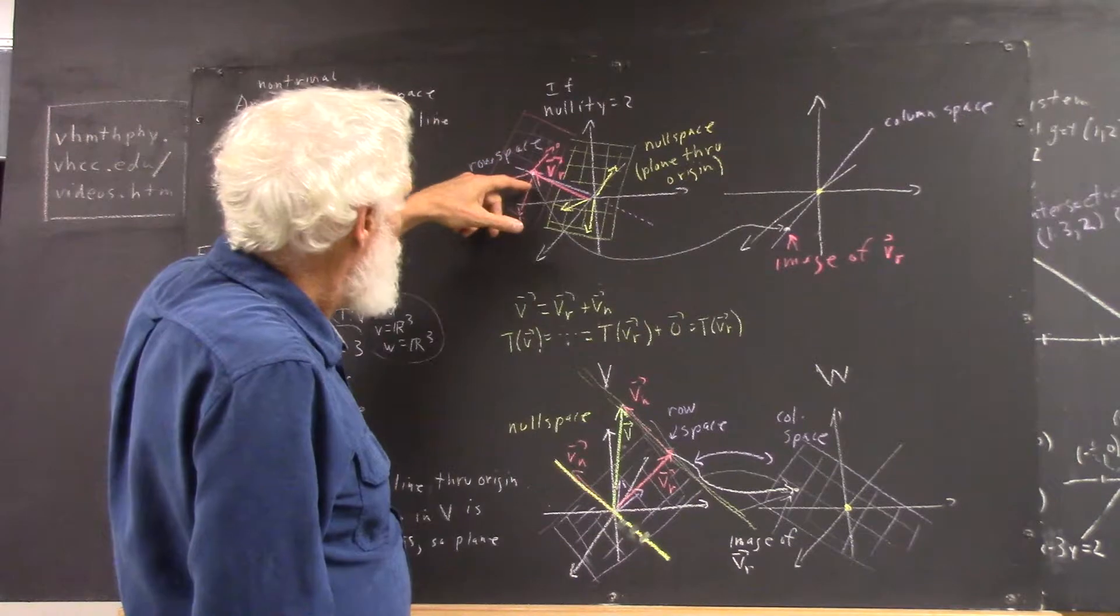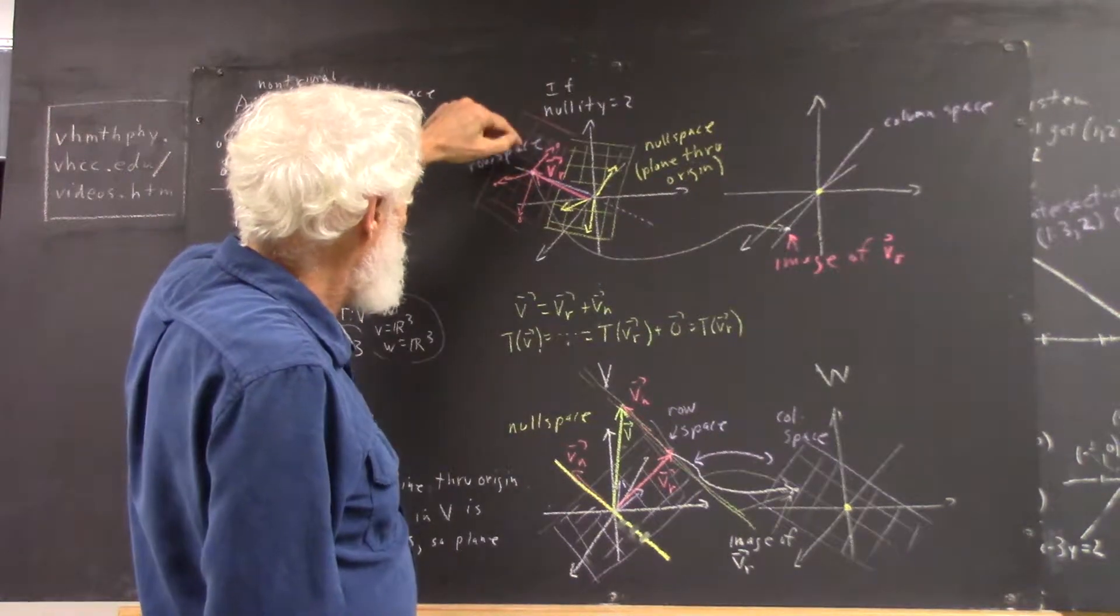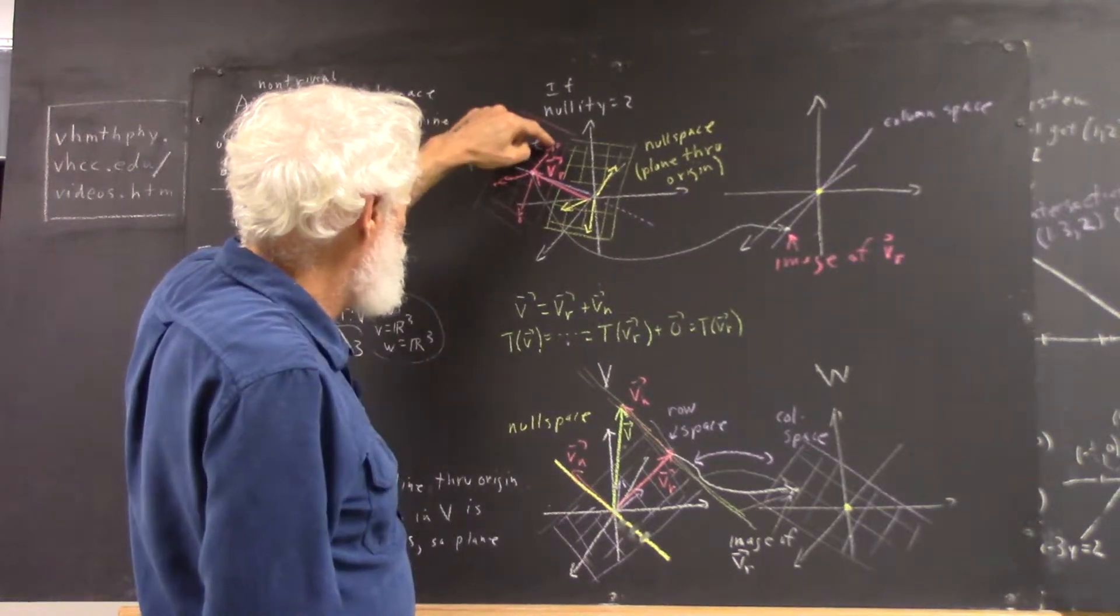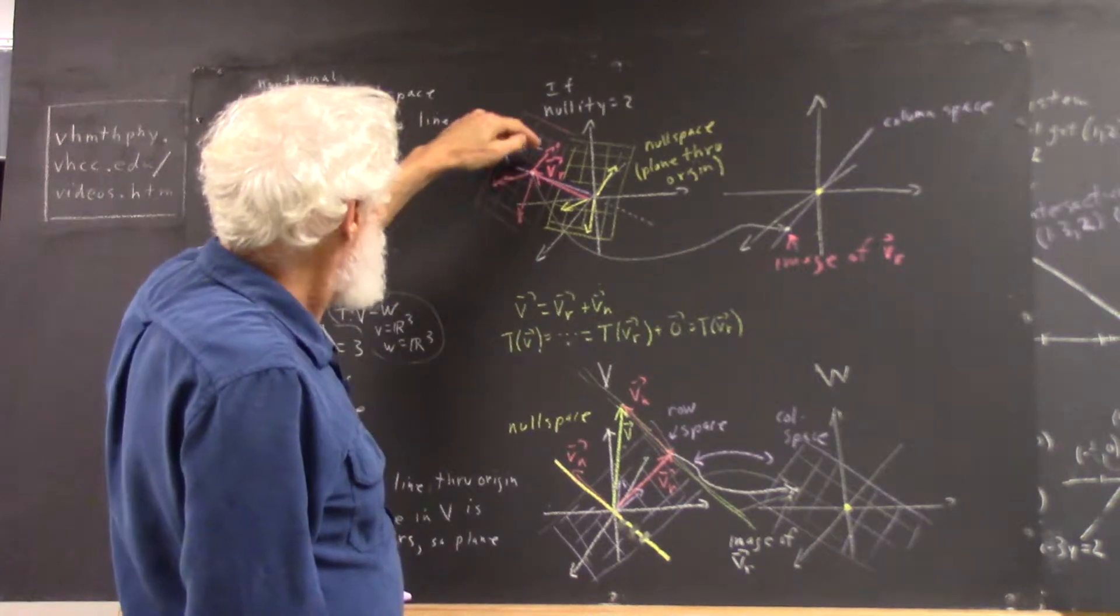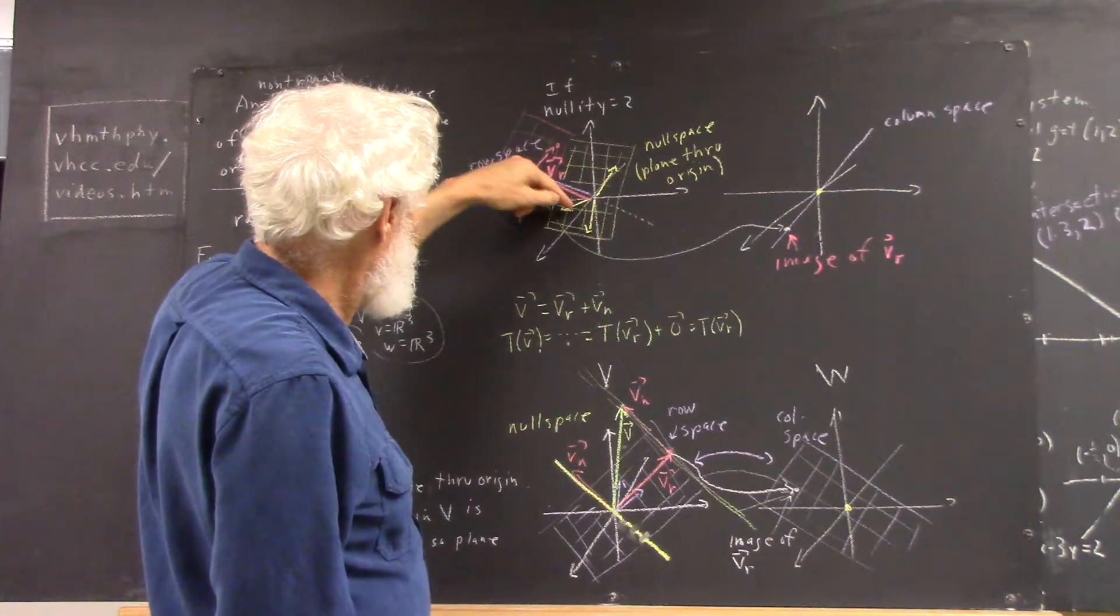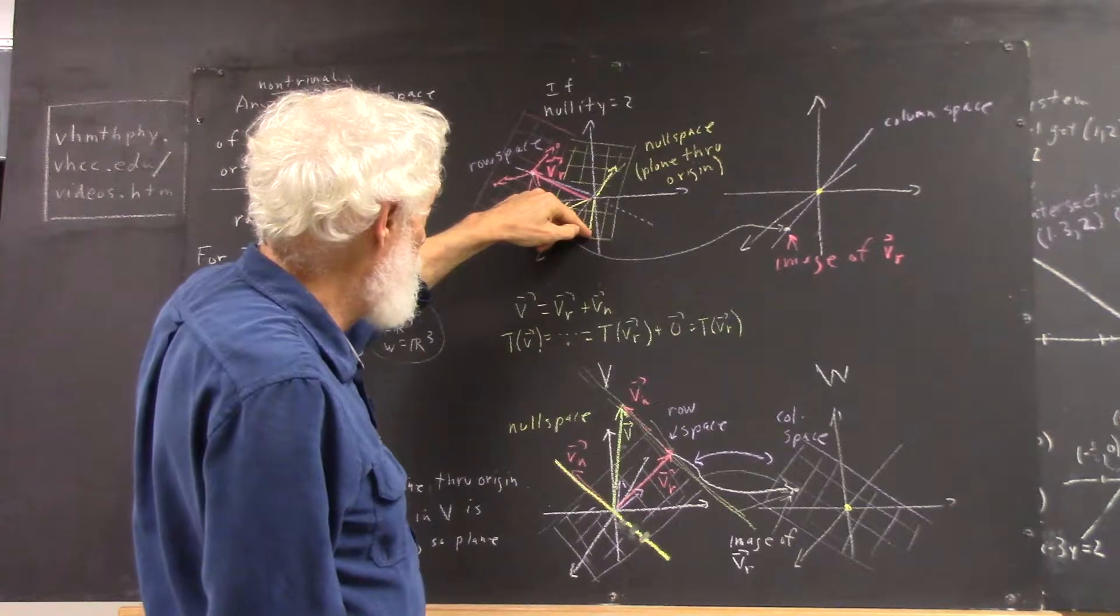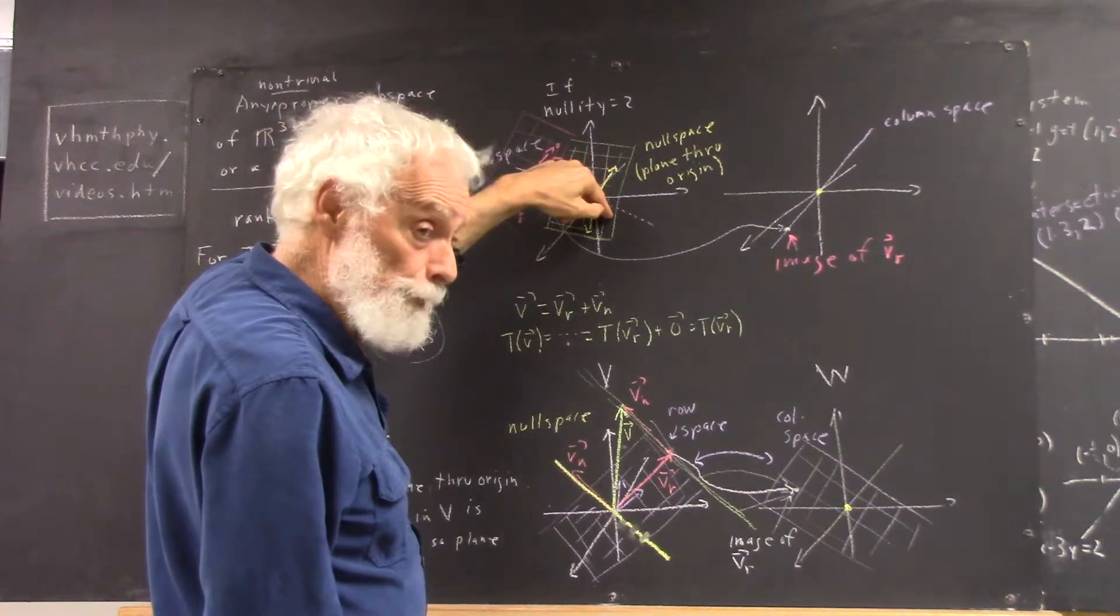If I add any vector in Vn, this is a vector in Vn, this, this, okay, because this vector is identified with this one, this vector is identified with this one, this vector is identified with this one, and all these are in the null space.